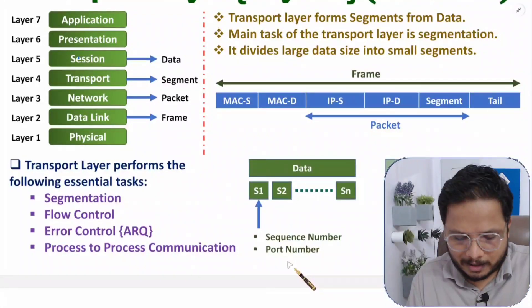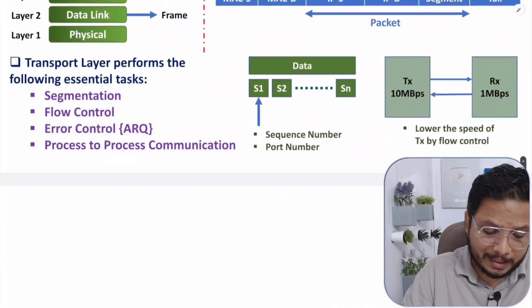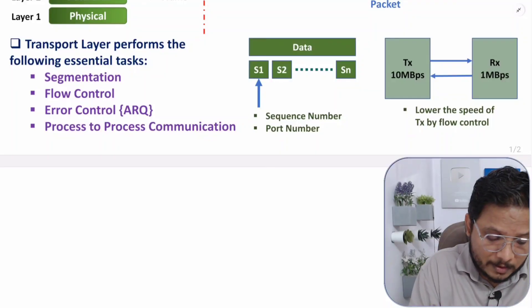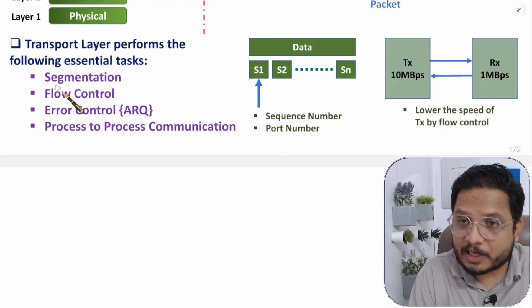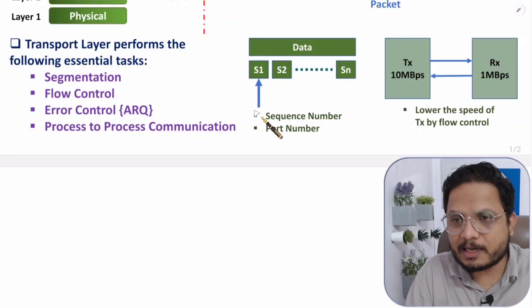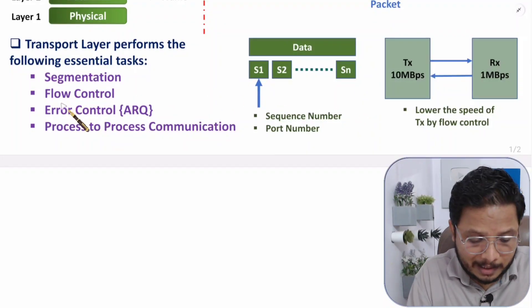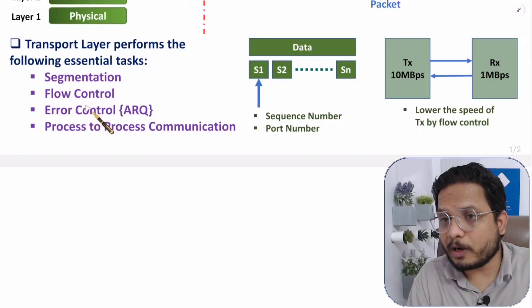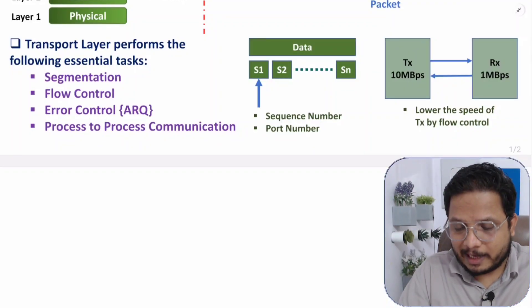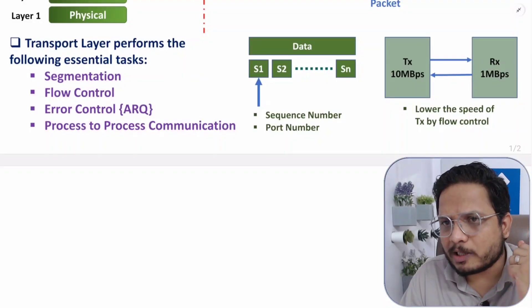Transport layer performs segmentation — that is now clear. But there are a few other functions happening at the transport layer as well, such as flow control. Flow control is a very essential mechanism. Let me give you an example to explain why flow control is required.